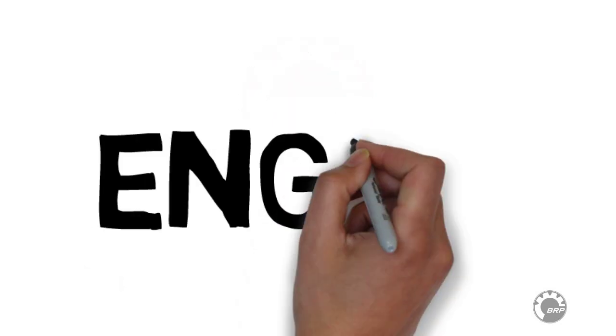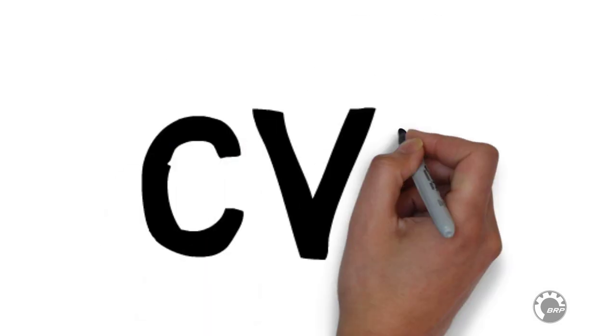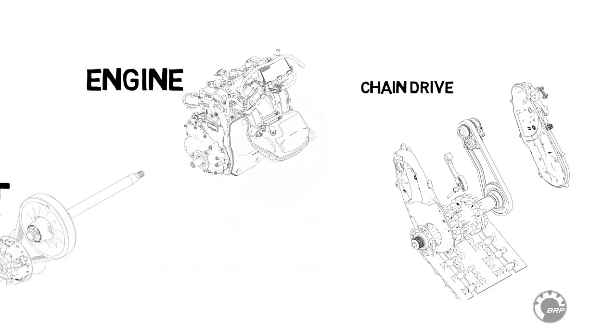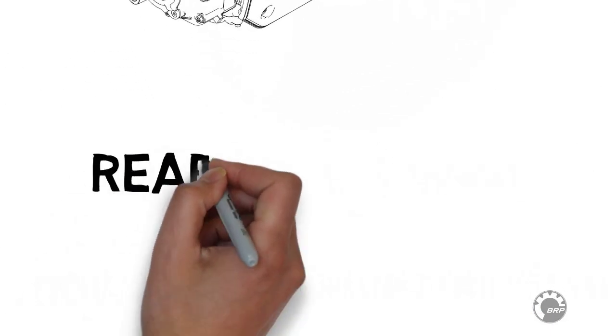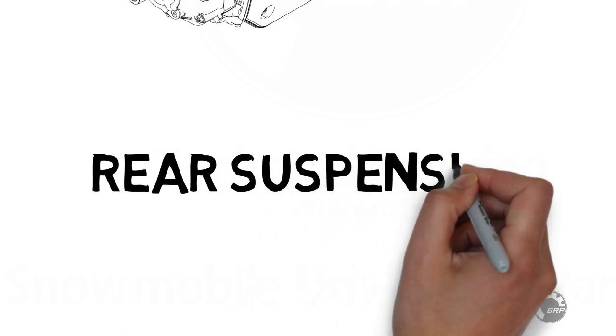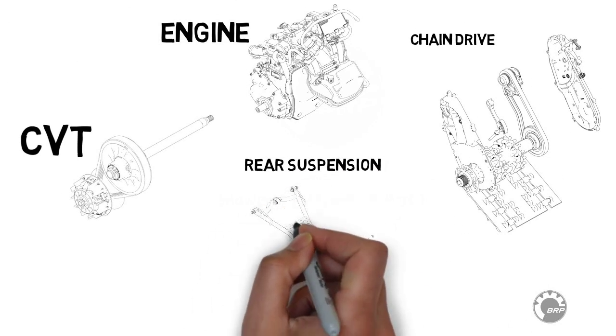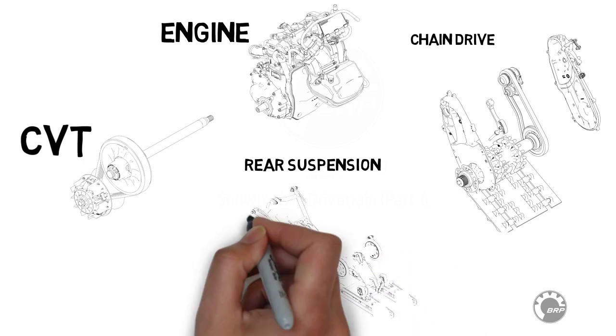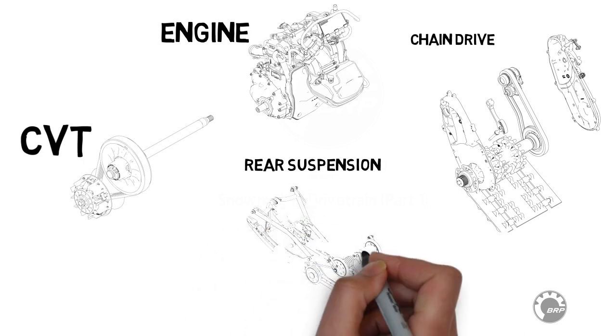A snowmobile driveline consists of four principal components: the engine, a continuously variable transmission, a secondary chain drive system, and the track and suspension. A snowmobile's rear suspension must be included in any discussion of the powertrain, as it plays a vital role in assisting the track in delivering power to the ground.